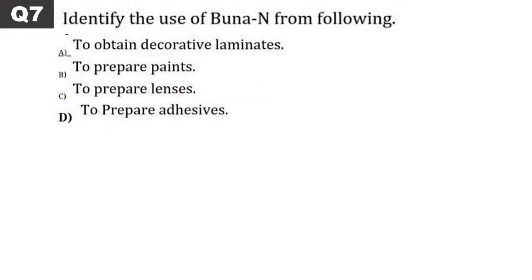Buna N is a rubber. From a rubber perspective, check: to obtain decorative laminates, to prepare pens, to prepare lens, to prepare adhesive. Adhesive is the answer. Note the reverse question is also possible: in preparation of adhesive, Buna N is used — the question can be flipped.